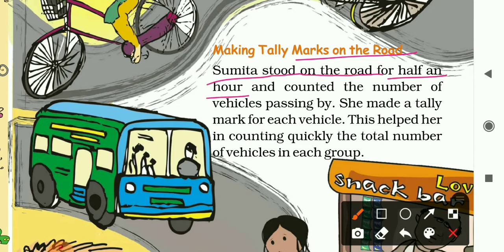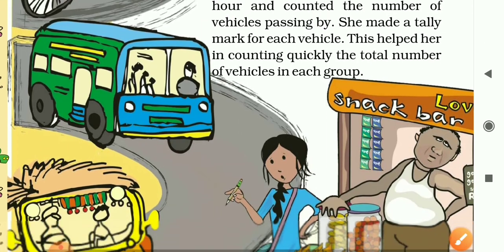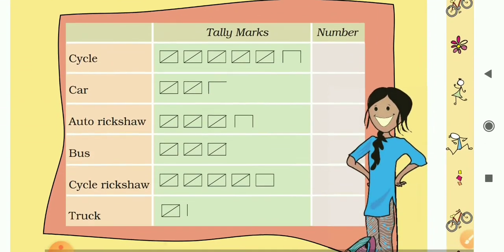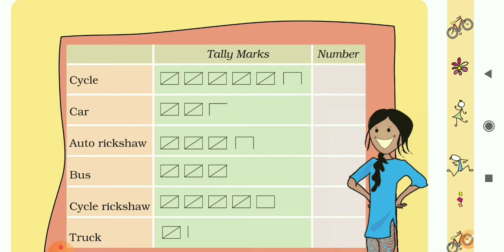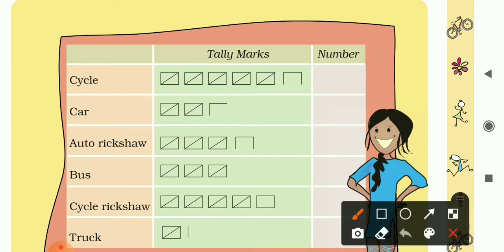Next activity: making tally marks on the road. Sumita stood on the road for half an hour and counted the number of vehicles passing by. You can see in this picture many vehicles like buses, cycles, auto rickshaws, and trucks on the road. She made a tally mark for each vehicle to help count the total number quickly. Here is the table of vehicles — on the left we have vehicle names: cycle, car, auto rickshaw, and others.